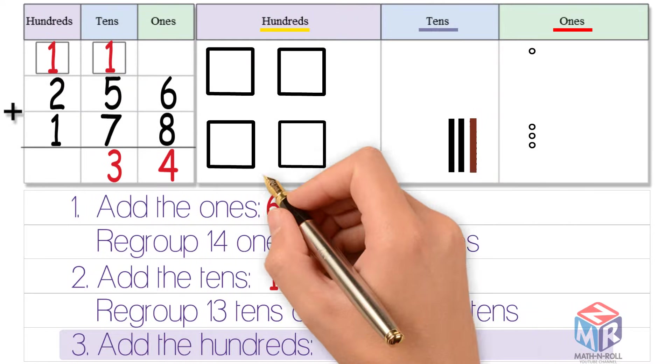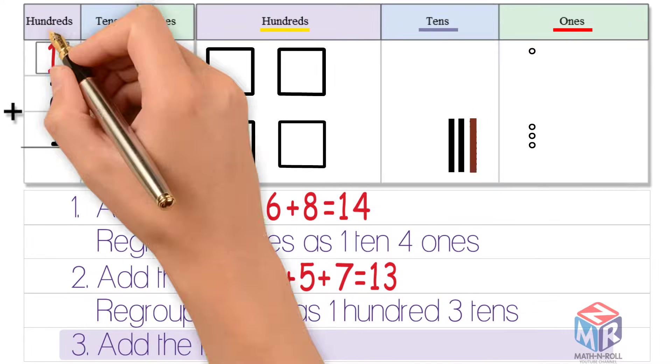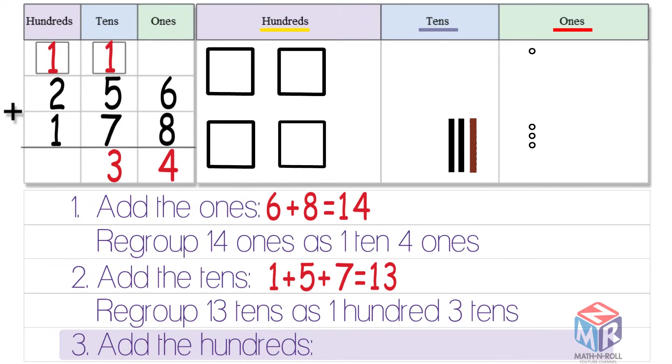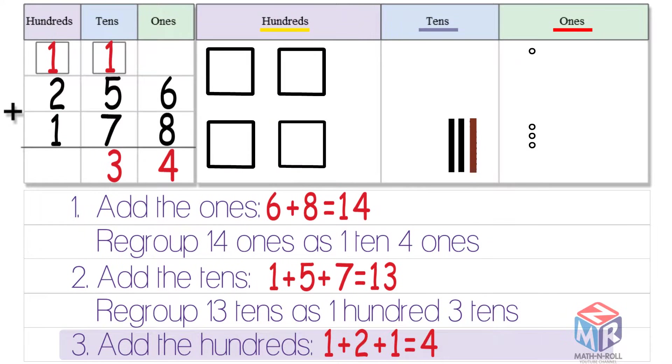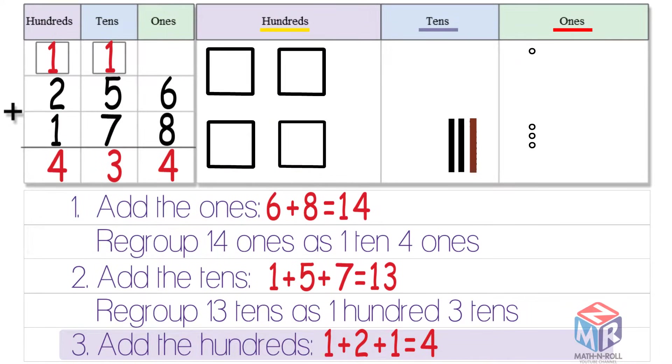Next, we add the hundreds. One plus two plus one is equal to four. So 256 plus 178 is equal to 434.